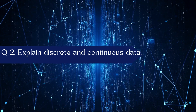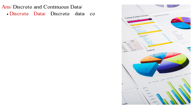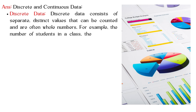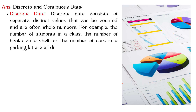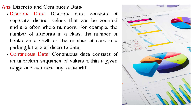Explain discrete and continuous data. Discrete data consists of separate, distinct values that can be counted and are often whole numbers. For example, the number of students in a class, the number of books on a shelf, or the number of cars in a parking lot are all discrete data.